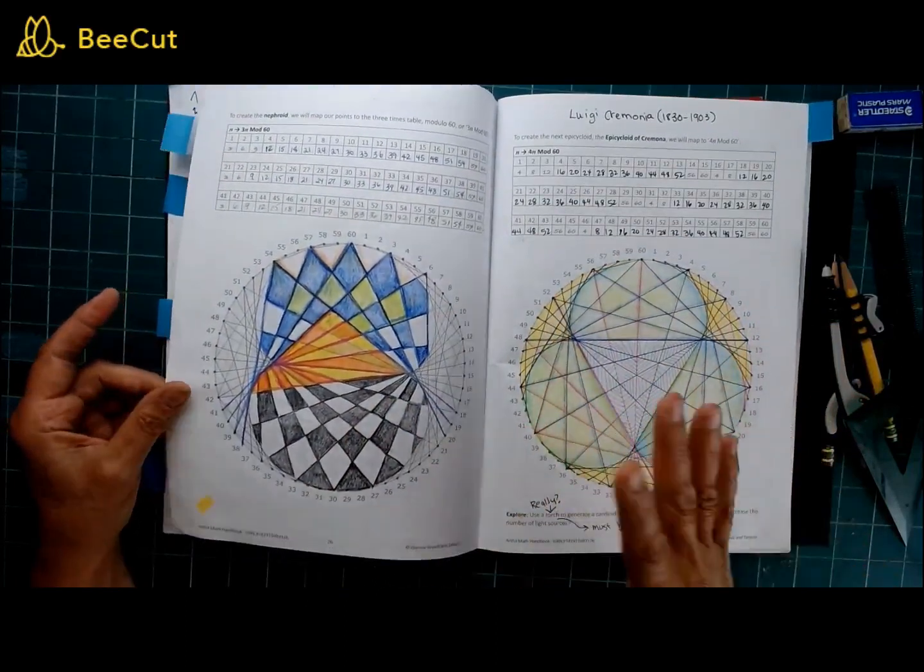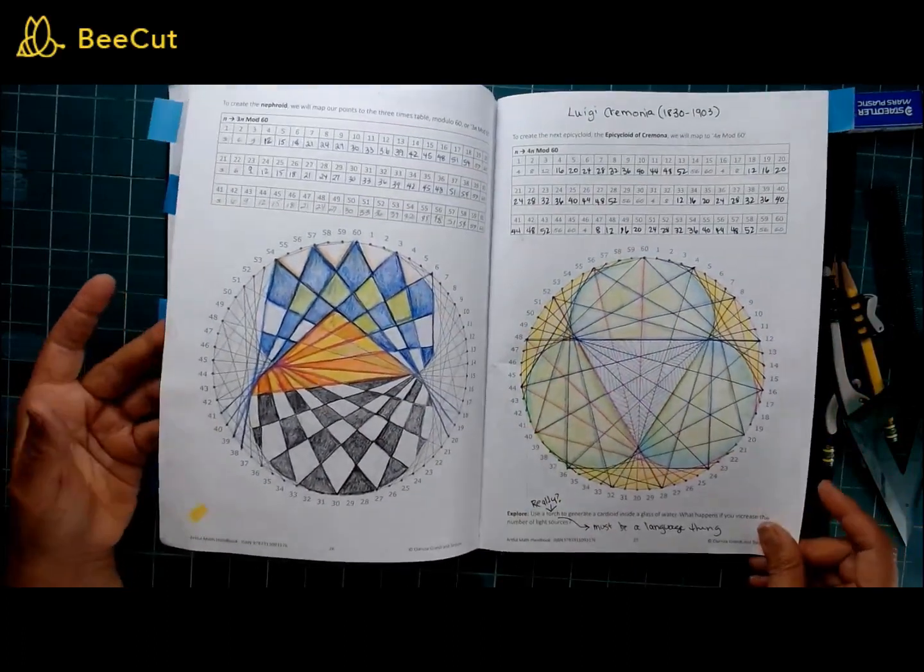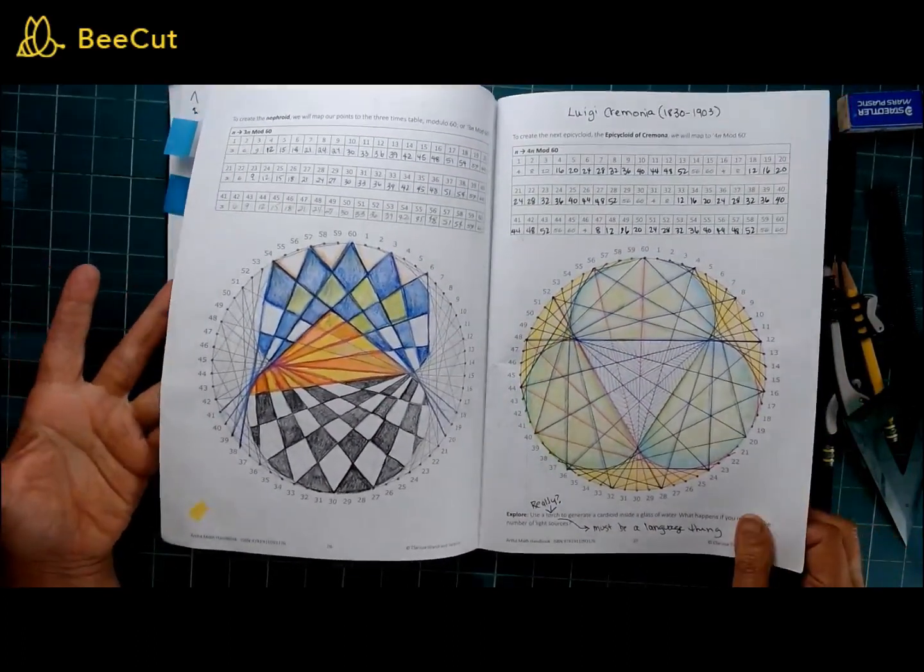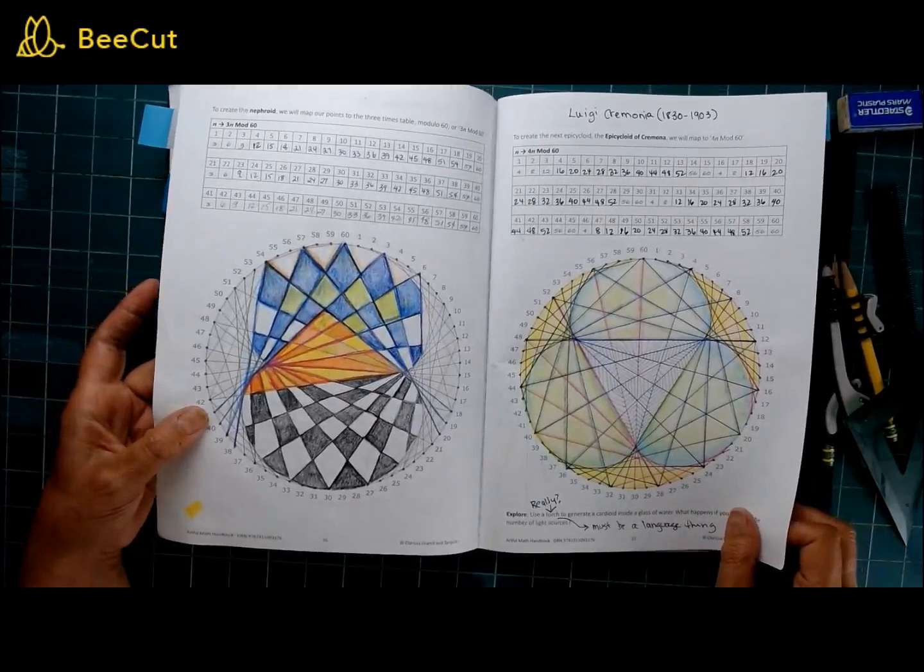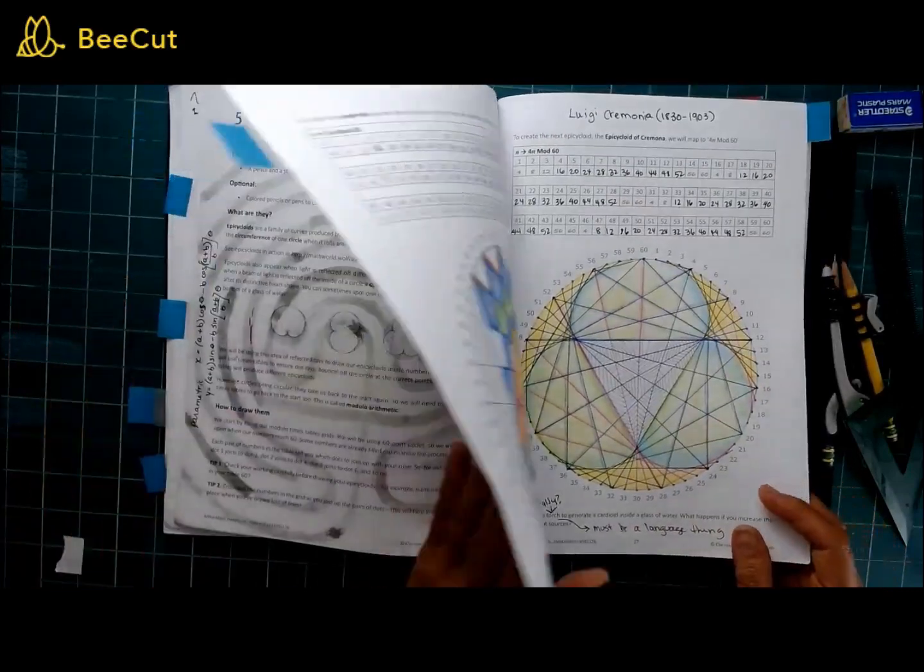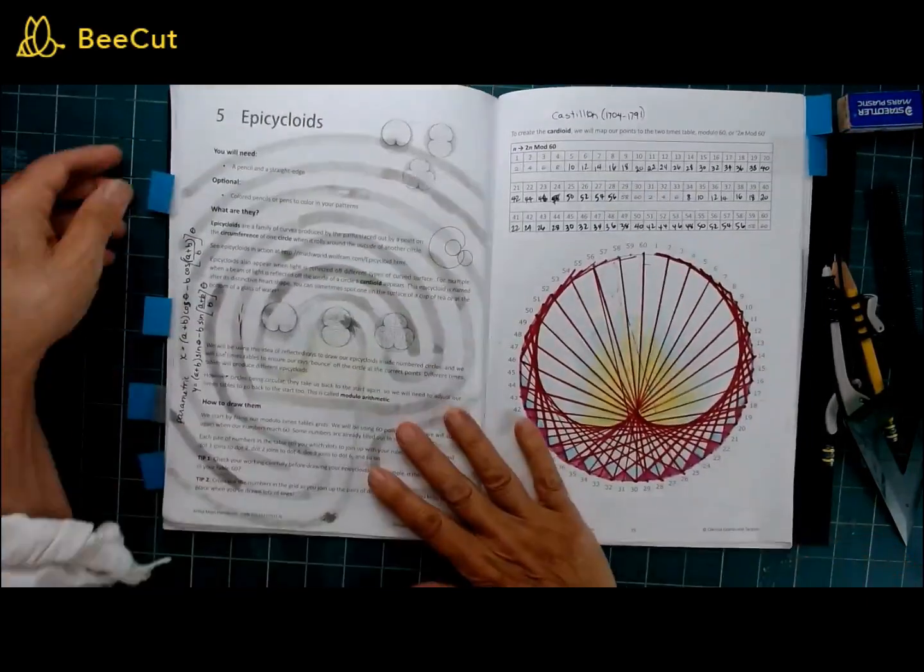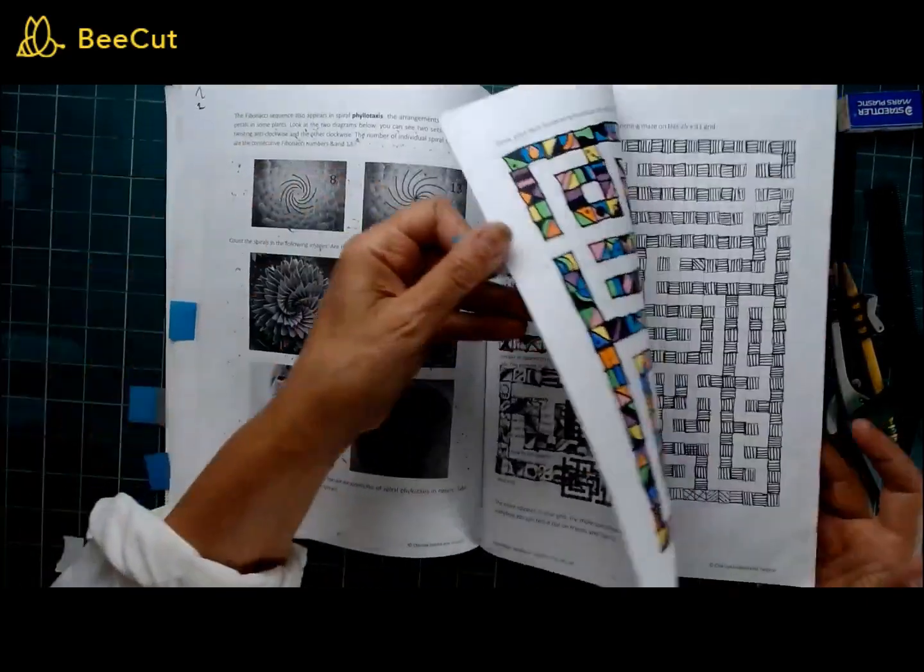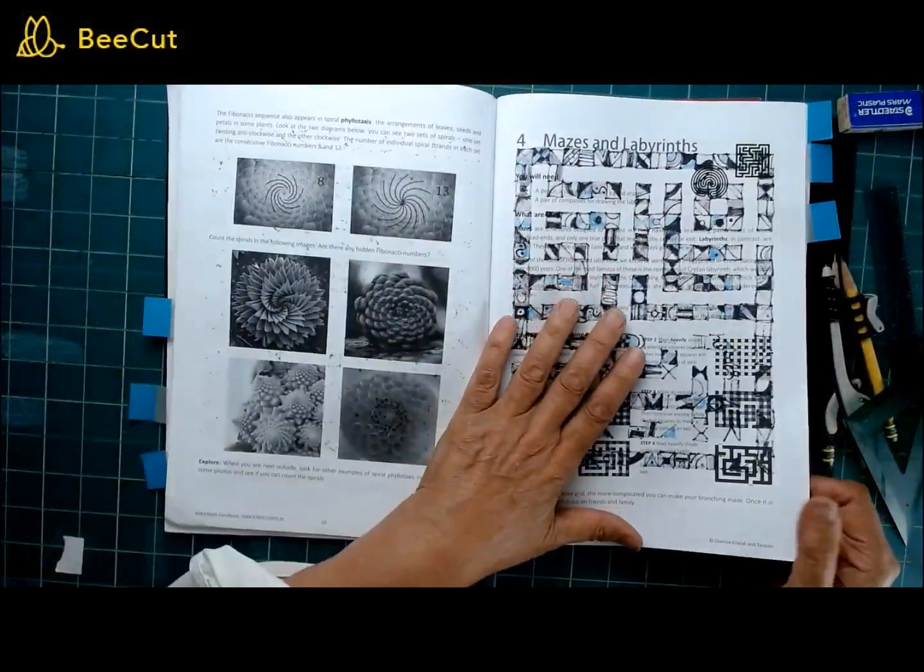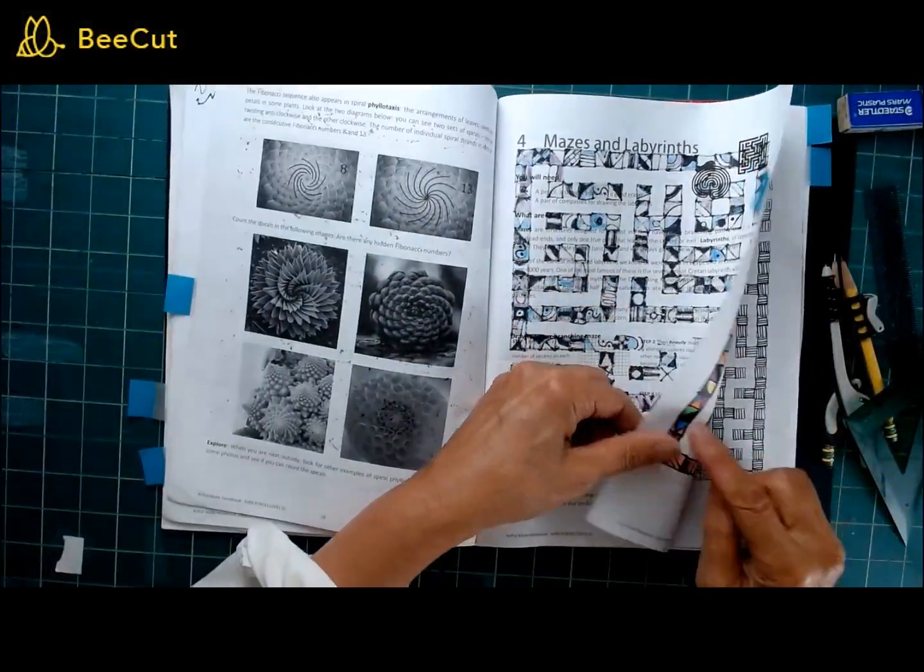Again, even though there's this very specific rule to create a very specific look, there's so many ways you can go with these things to make just an infinite number of designs. I'd love to do this with a class. I would love to see all the different things the kids would come up with.